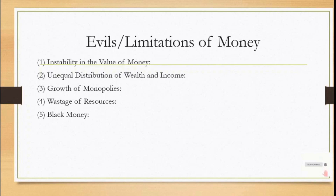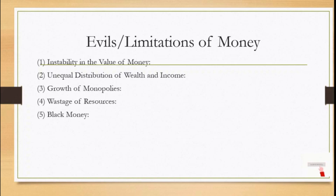Next point: black money. Money, being a store of value, lures people to hoard it. The tendency to hoard money and become rich is the root cause of the evil of black money. When people evade taxes and conceal their income and hoard it, it is black money. This leads to a parallel economy within the country which encourages conspicuous consumption, black marketing, speculation, etc.